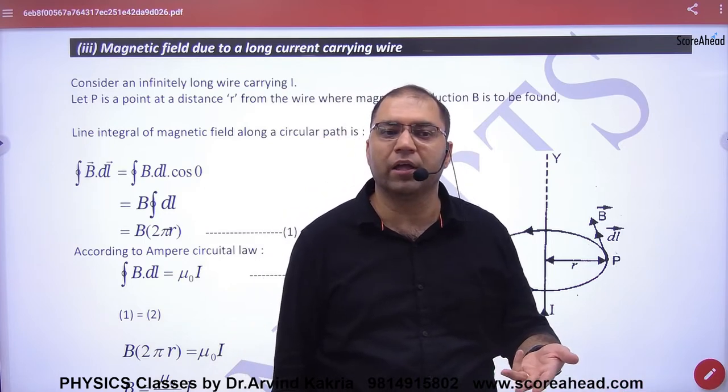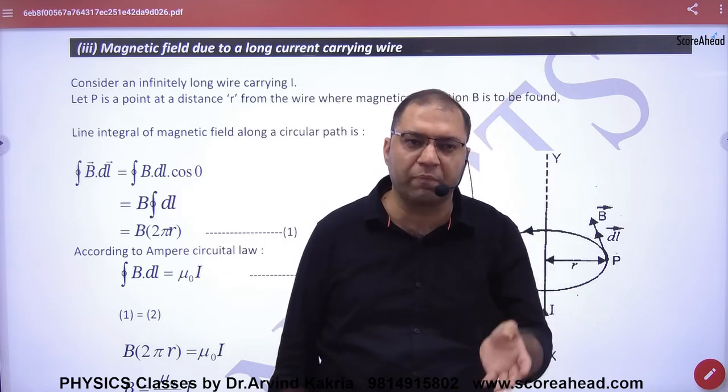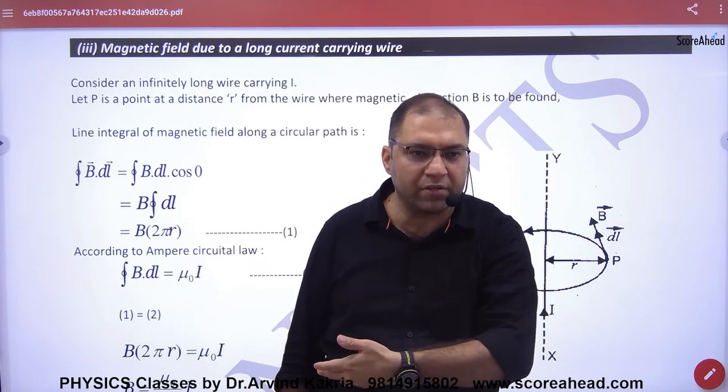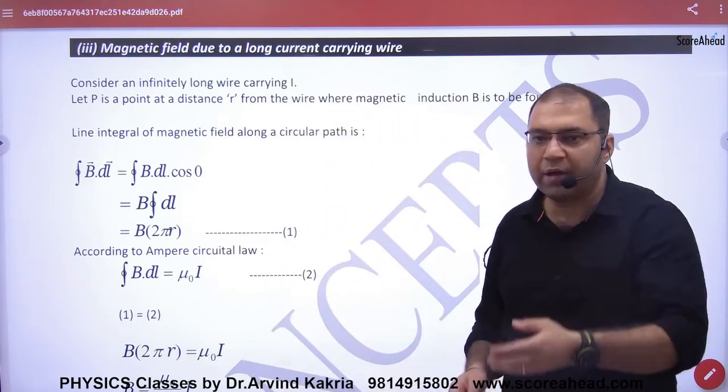How did we derive this? By Biot-Savart's law - a long derivation, a special case. It was a long work. This Ampere's Circuital Law will do the same work in two lines. How and where do you have to take it out?